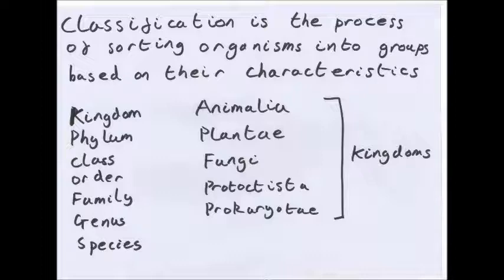Classification is the process of sorting organisms into groups based on their characteristics. There is a seven-part classification system: all animals are firstly split into a kingdom, then into a phylum, then a class, then an order, then a family, then a genus, then a species. There will be one species but there could be a number of species in a genus, a number of genera in a family, a number of families in an order and so forth.